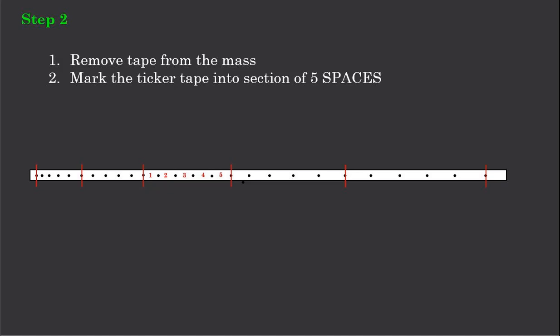We then count 5 gaps - 1, 2, 3, 4, 5 - and we mark on the next dot, then a further 5 and so forth. We are dividing up our ticker timer tape from start to finish in divisions of 5 gaps or 5 spaces.